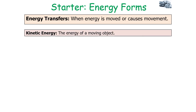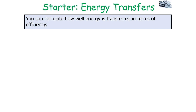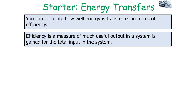When we consider energy transfers, we have kinetic energy (the energy of movement), as well as sound, light, and electrical energy, which are ways in which energy can be transferred within a system. You can also calculate how well energy is transferred in terms of efficiency — efficiency is a measure of how much useful output there is in a system compared to the total input.